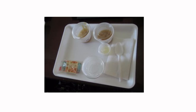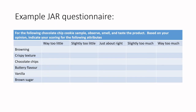Here is an example JAR questionnaire. We have 'just about right' at the center point, with 'too little' on the left-hand side and 'too much' on the right-hand side — a mirrored structure of slightly too little, just about right, slightly too much, way too little, way too much. For chocolate chip cookies, you'd first have an informed consent document ensuring people don't have allergies and understand the risks, benefits, compensation, and communication pathways before proceeding to the questionnaire.